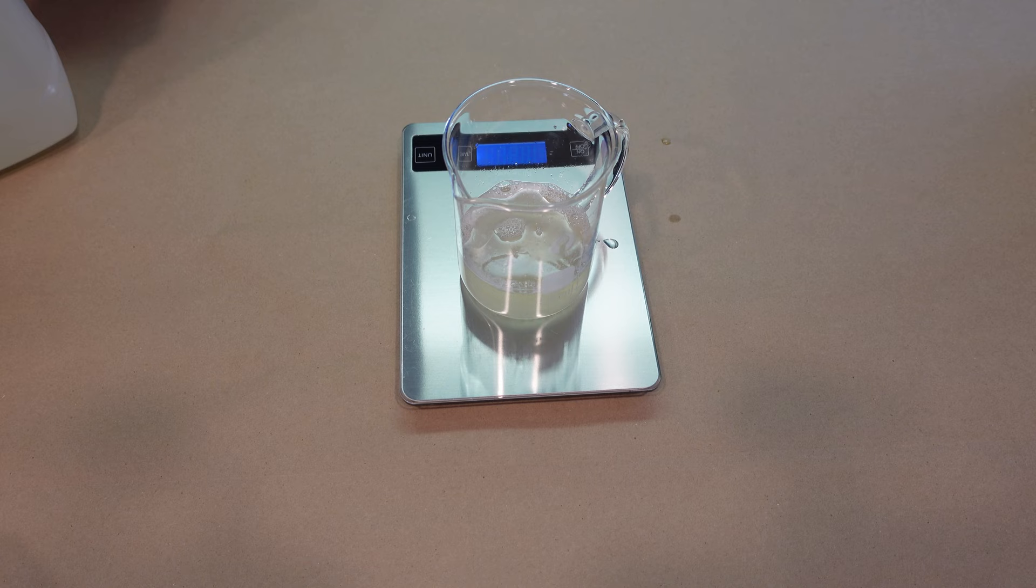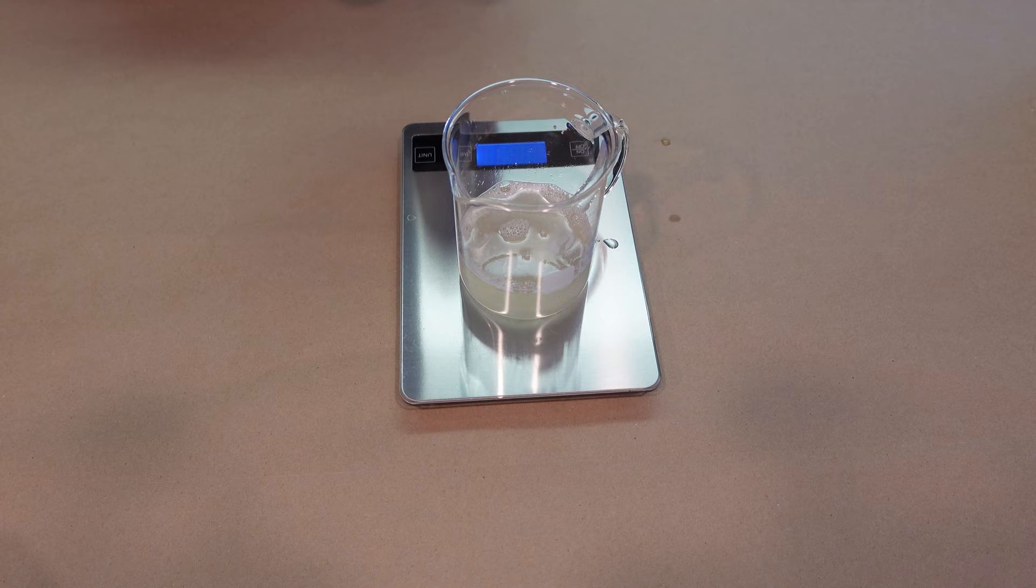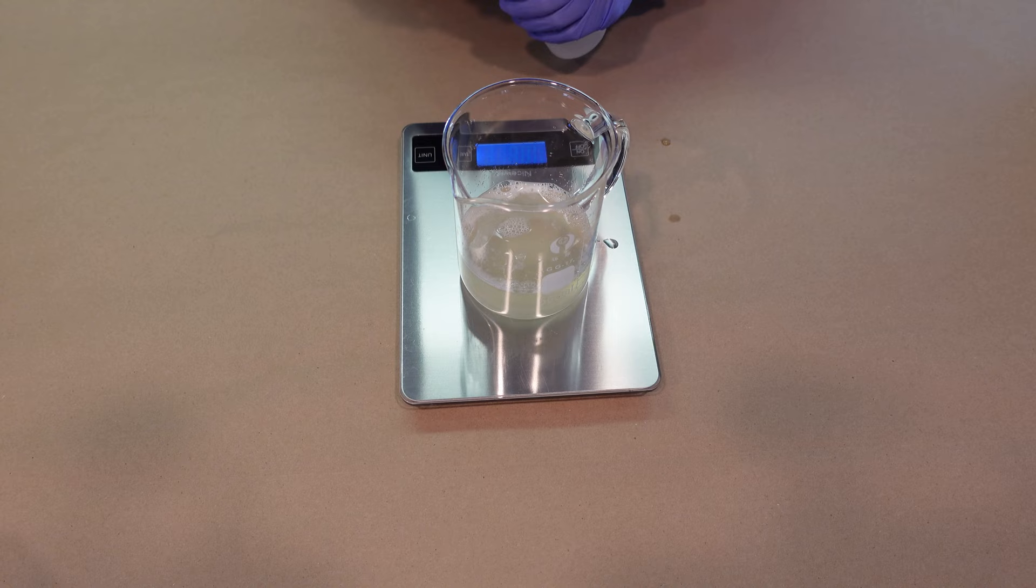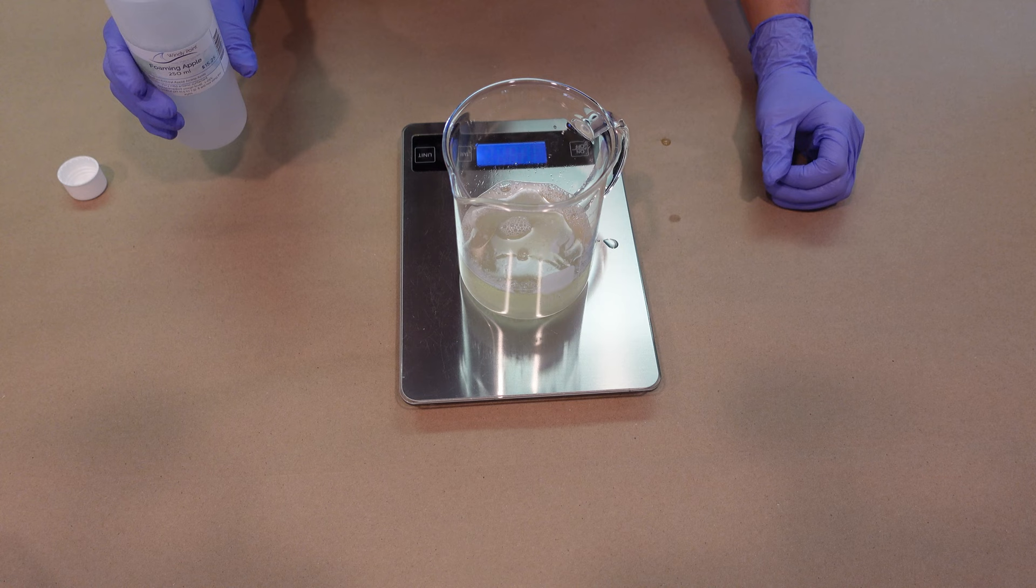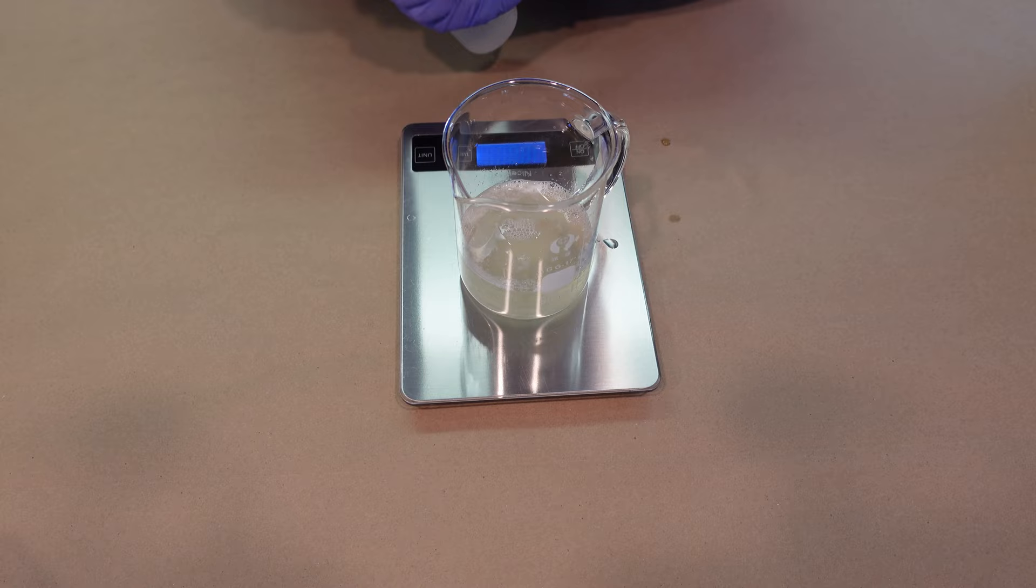The last surfactant we're going to be using is some Foaming Apple. These three surfactants combined are so gentle, perfect for facial care. Foaming Apple is actually a surfactant made out of apples, so it's very very gentle. This is also gentle around your eyes, which is why I like it for facial care.